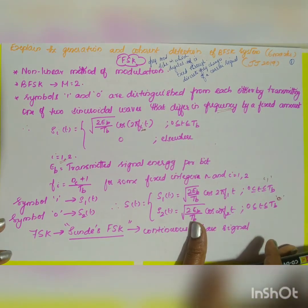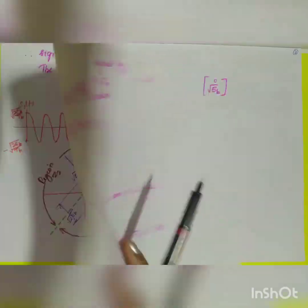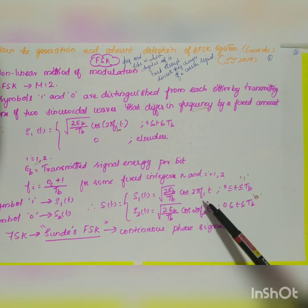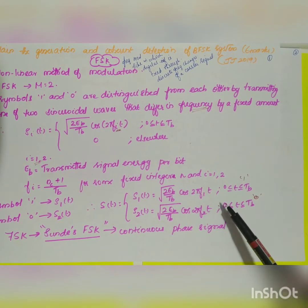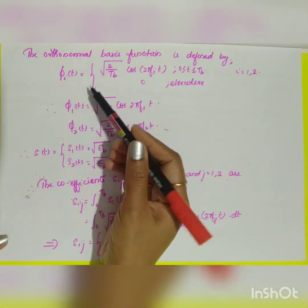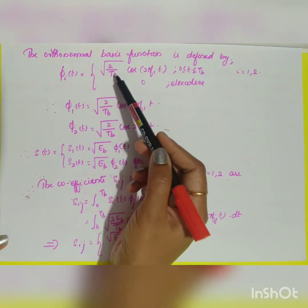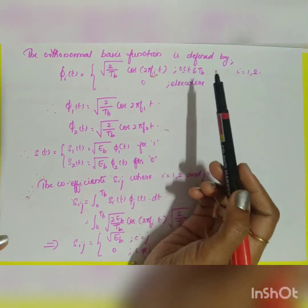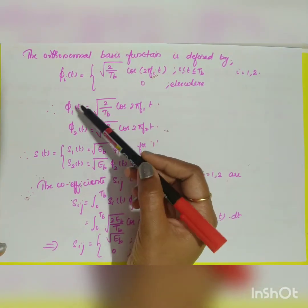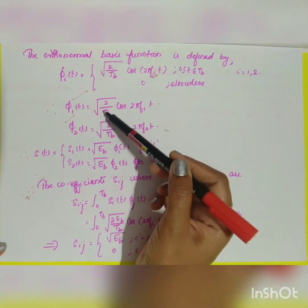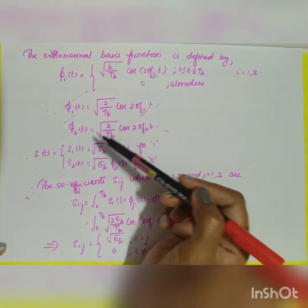These are the two generalized signal representations. To detect them, we use the Gram-Schmidt orthogonalization principle to find the orthonormal basis functions. Since there are two different frequency components f_1 and f_2, there will be two orthonormal basis functions. In general, φ_i(t) = √(2/T_b) · cos(2πf_i·t), for i = 1, 2, over 0 to T_b. So φ_1(t) = √(2/T_b) · cos(2πf_1·t) and φ_2(t) = √(2/T_b) · cos(2πf_2·t).